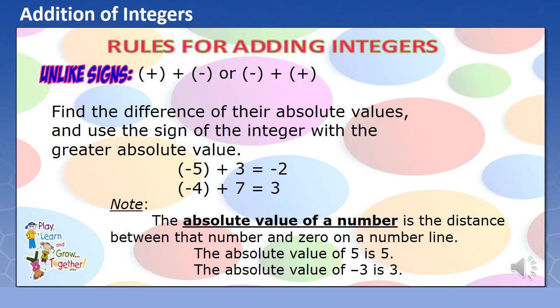For adding integers with unlike signs, find the difference of their absolute values and use the sign of the integer with the greater absolute value. For example, negative 5 plus positive 3 is negative 2. Take note that negative 5 and positive 3 are integers with unlike signs, so we subtract 5 and 3 and that is 2. Since negative 5 has greater absolute value than positive 3, we use the sign of negative 5 for our final answer.